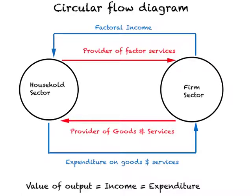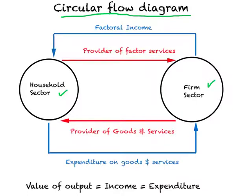To understand the different approaches to measuring GDP, consider a simple circular flow diagram that represents how things move within a country. Suppose we divide a country into two sectors: the household sector, where people like you and me reside, and the firm sector, the place where we go and work.